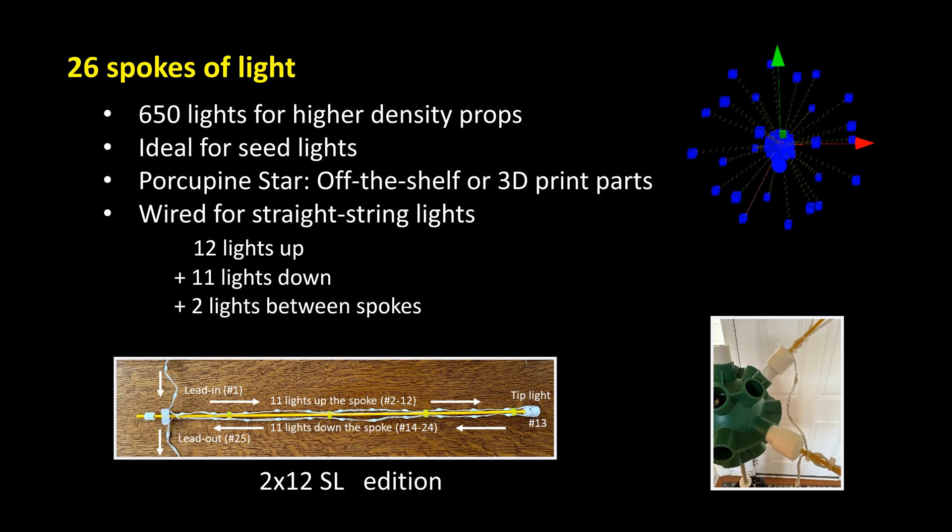The way it works is you have 12 lights going up the spoke with the 12th light being the tip. You go down 11 more lights, and then between each of the spokes you have two lights. That provides just enough wire for you to be able to have multiple spokes along the same string of lights.